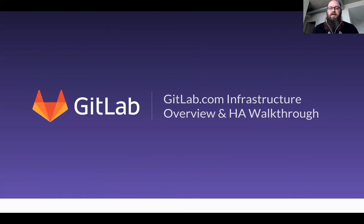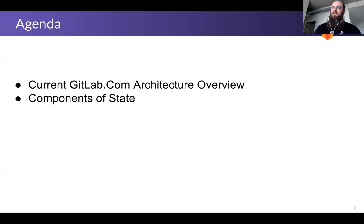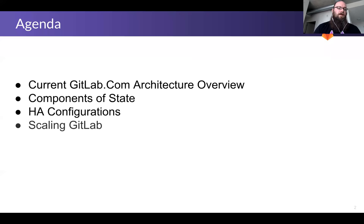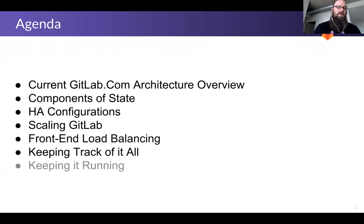Let's dive right in. Today we're going to cover: our current GitLab architecture and overview; the components of state — what is stateful and what isn't; what can you reboot anytime you want versus what needs care; our HA configuration and how we scale; the scaling of GitLab in terms of what components scale horizontally versus vertically; front-end load balancing; keeping track of it all — how we manage this; and keeping it running — how we monitor and what that looks like.